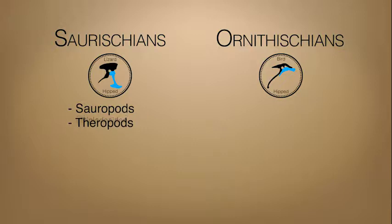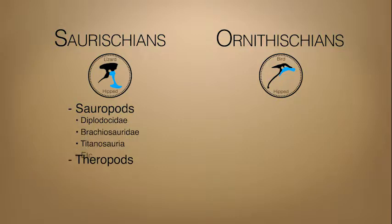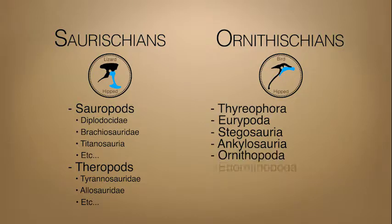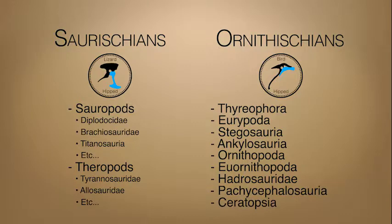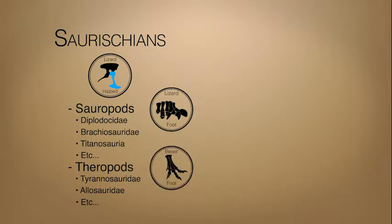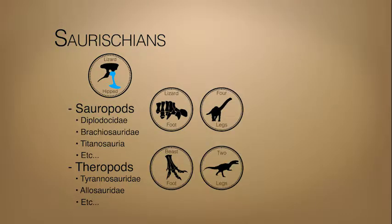These two groups are subdivided into many smaller groups based on specific characters that make them different from one another. The ornithischian, or bird-hipped dinosaurs, are also divided into smaller groups. We have already discussed some characters of two groups of the saurischian dinosaurs.